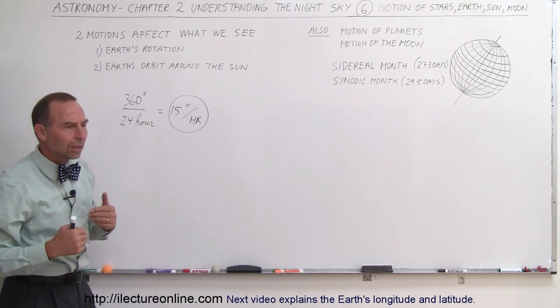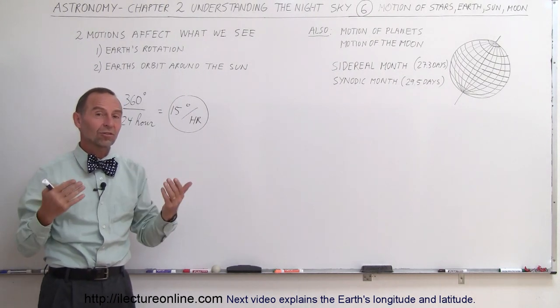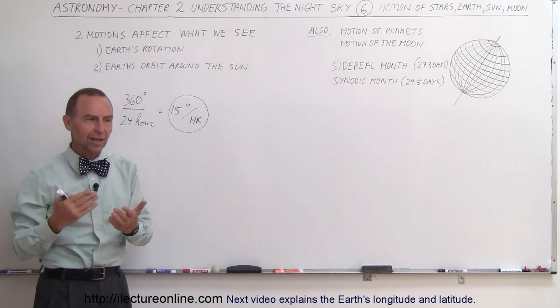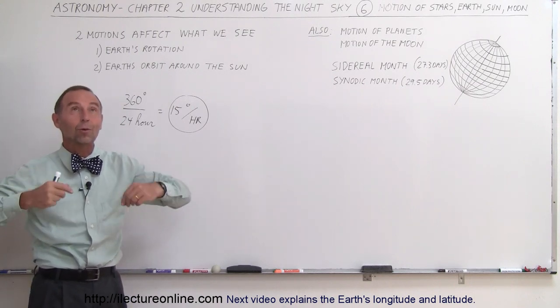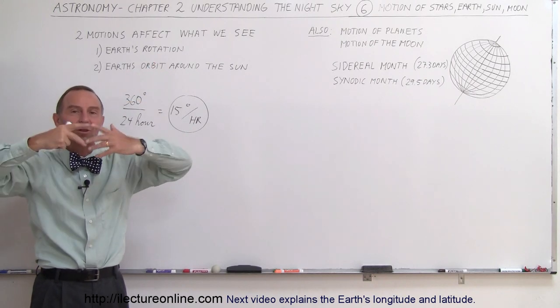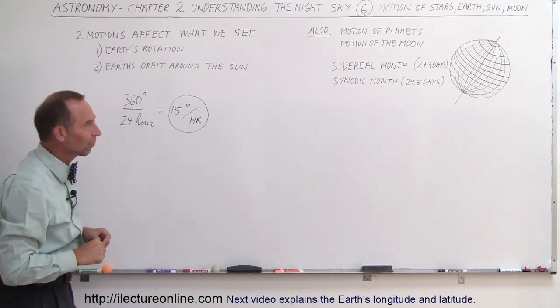Also, what we find is that we see certain stars and certain constellations at some times of the year, and other times of the year, they're simply not visible to us because they're only above us during the daytime when the sun drowns out all the light from the stars and we can't see it.